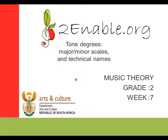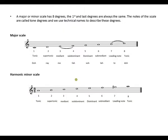Hello, welcome to Music Theory Grade Two. This is week seven, brought to you by ToEnable. This week we will take a look at tone degrees, covering tone degrees for a major and minor scale, also looking at the technical names. A major or minor scale has eight degrees as we all know.